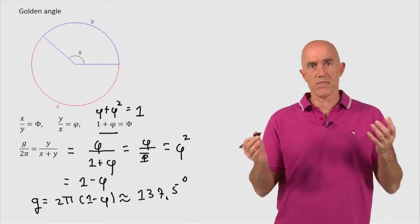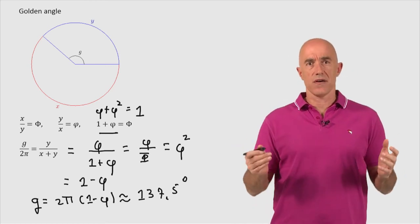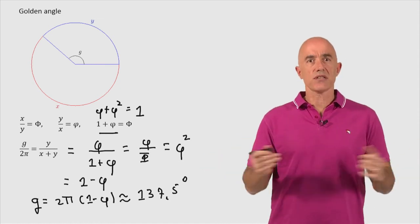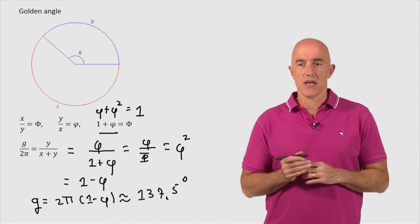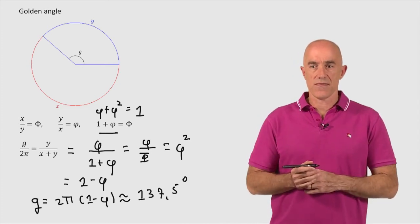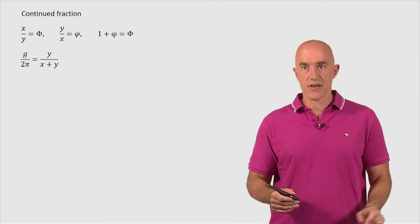The golden angle will then become an important angle in our modeling of the sunflower. And since we've already talked about continued fractions, it's important for us to know what is the continued fraction of the golden angle. So let's try and figure that out.